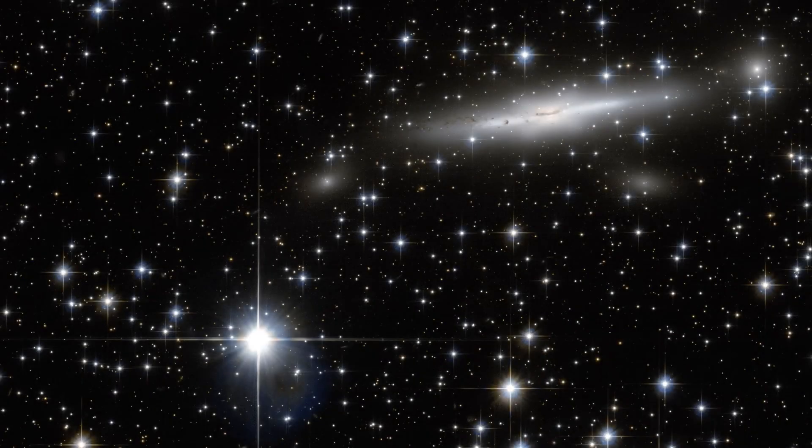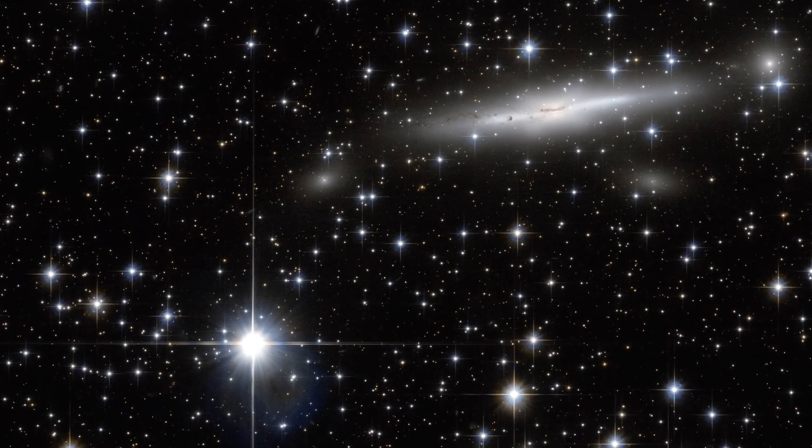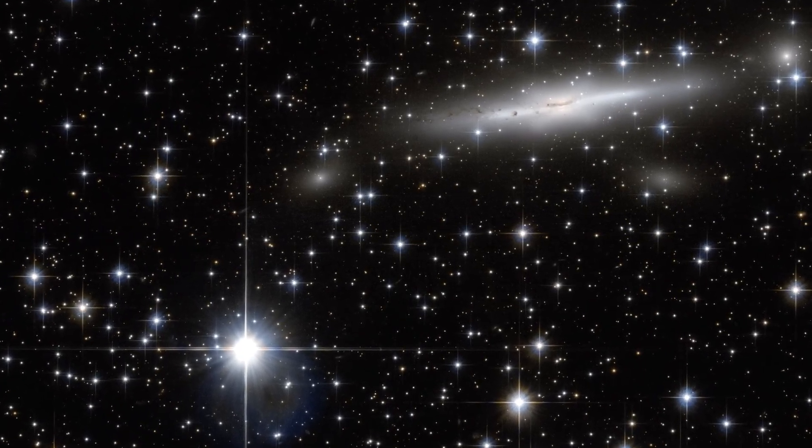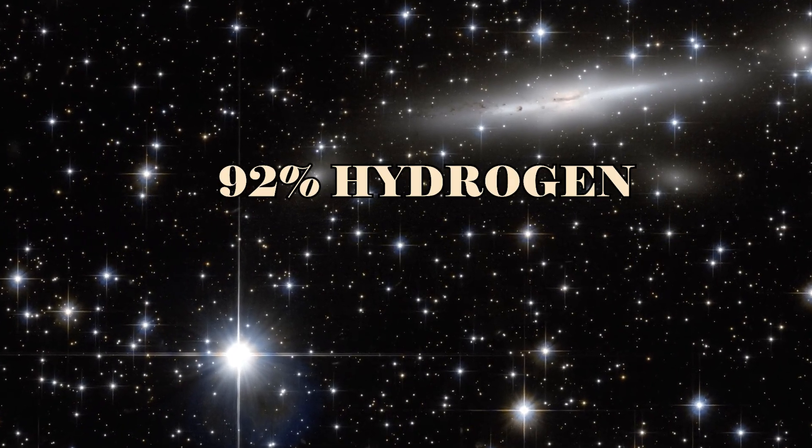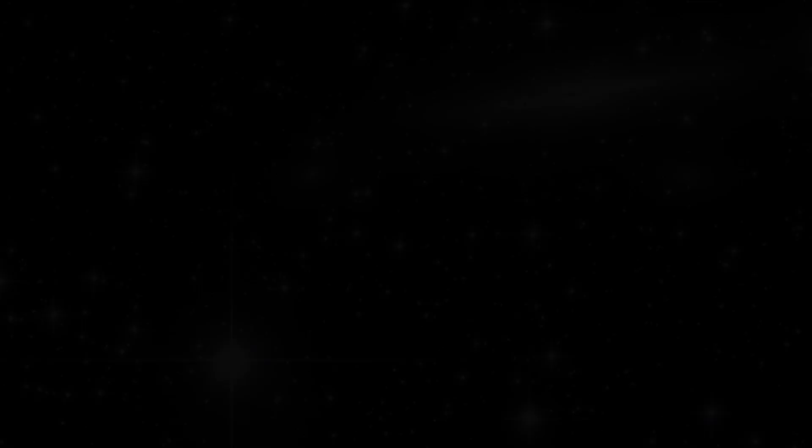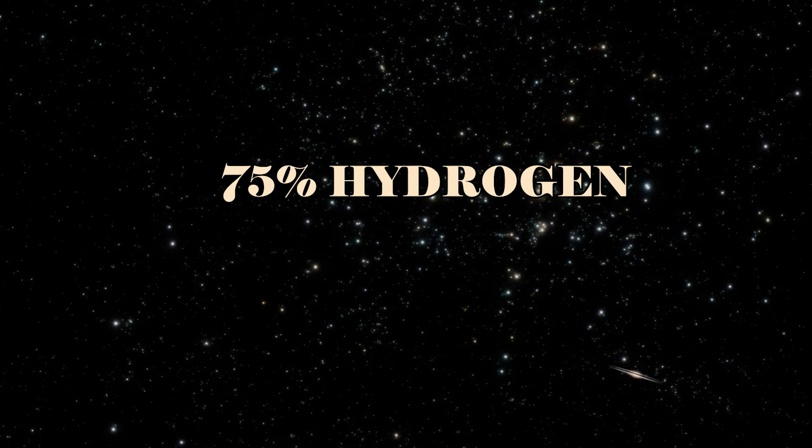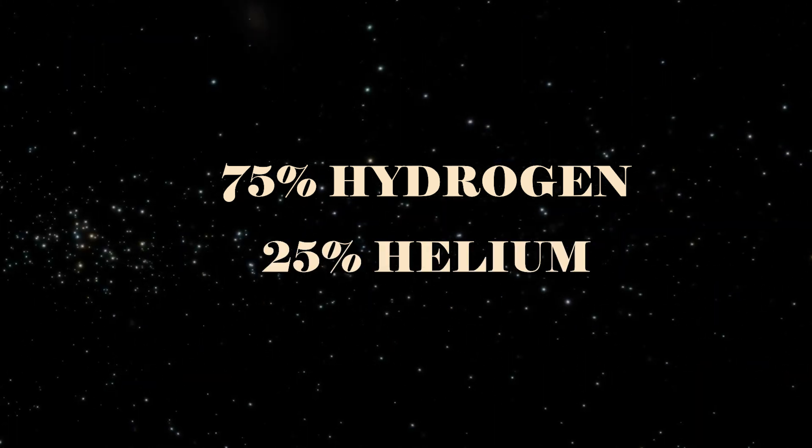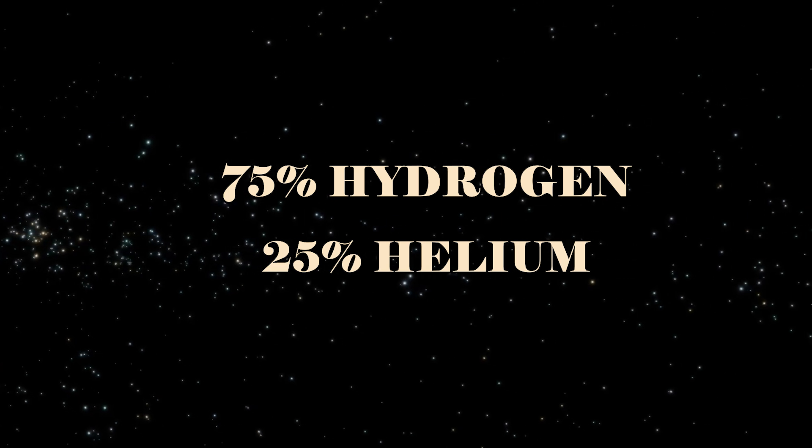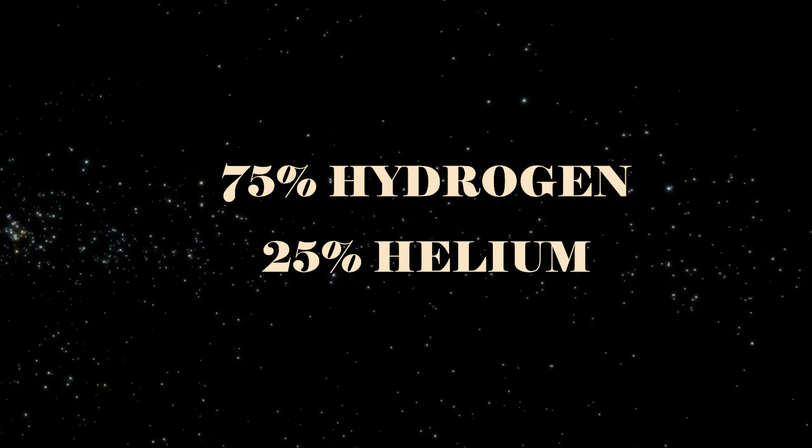At the time after the Big Bang, this cosmic kitchen is presumed to have contained about 92% hydrogen and 8% helium, or, if measured by mass, approximately 75% hydrogen and 25% helium. These basic elements formed the essence of the universe in its early days.